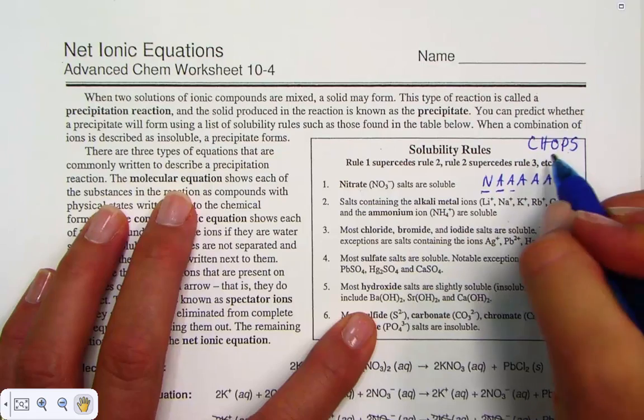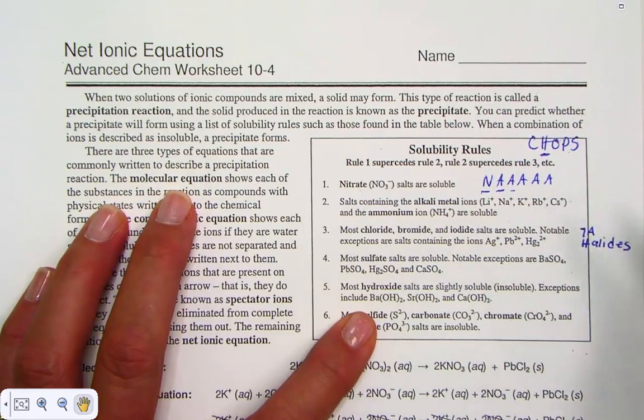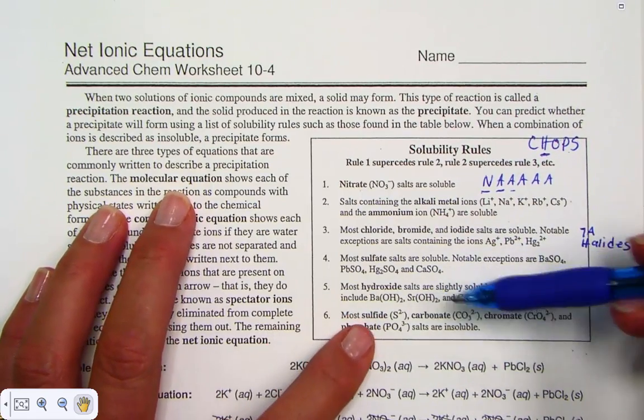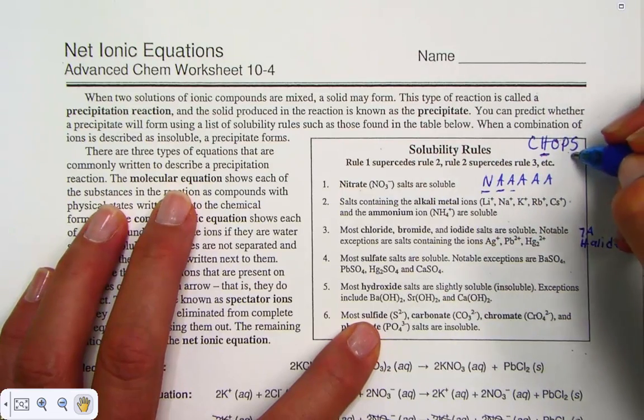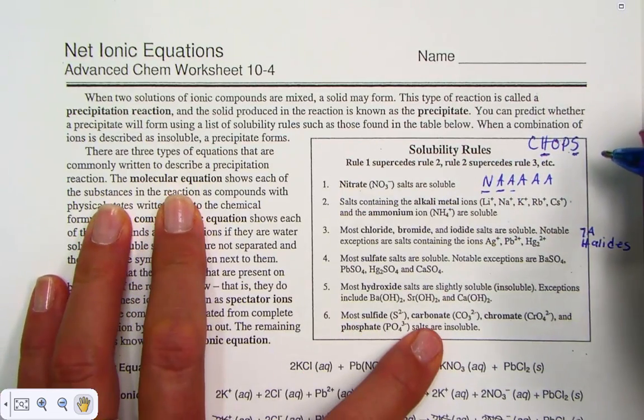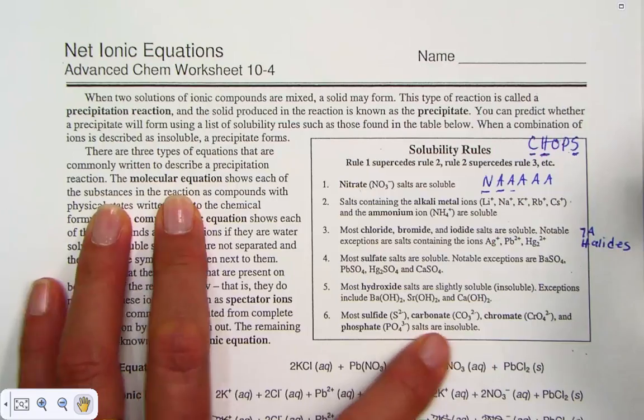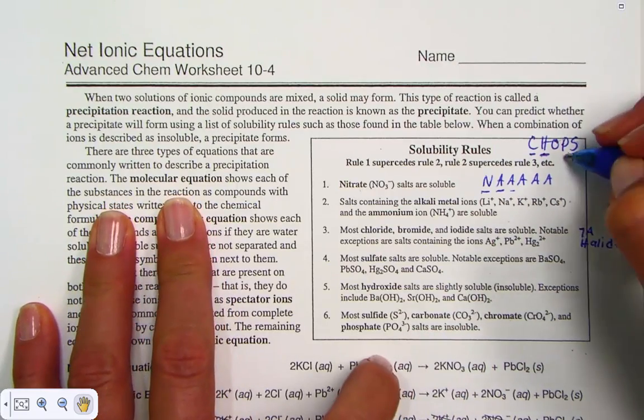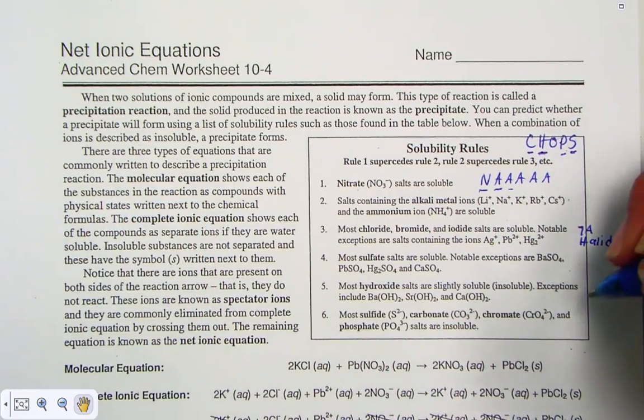Hydroxides is the H in CHOPS. Most sulfides—there's the S—carbonates, that's the C, chromates, and phosphates are insoluble.